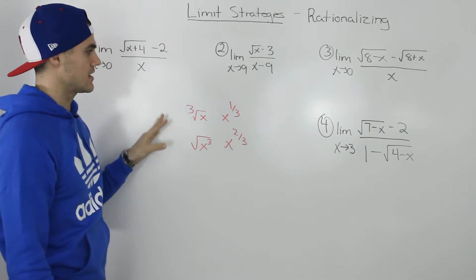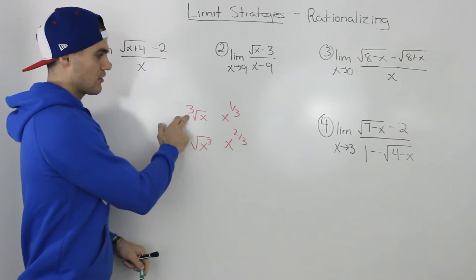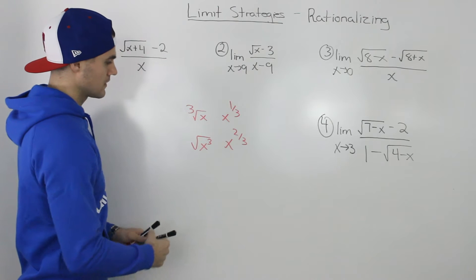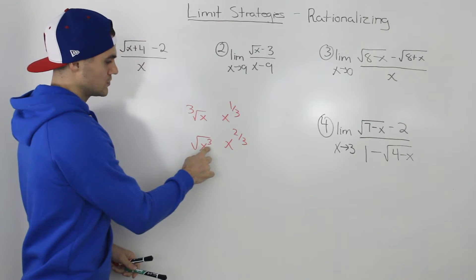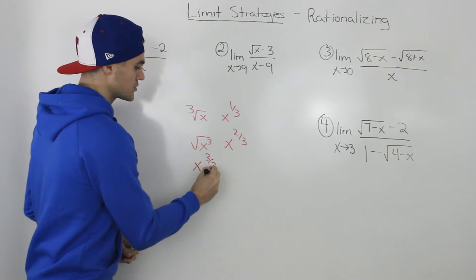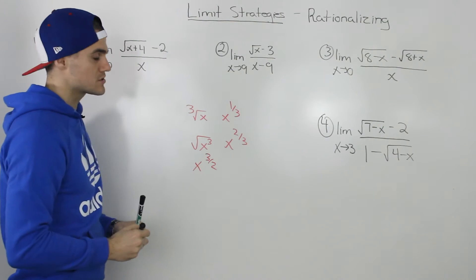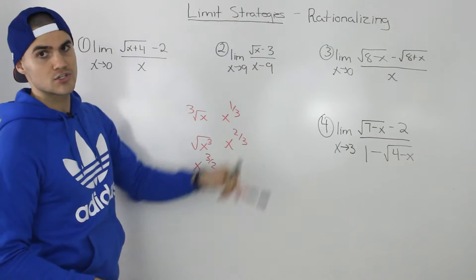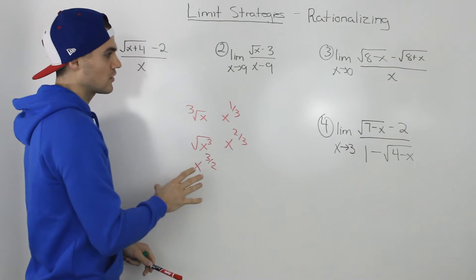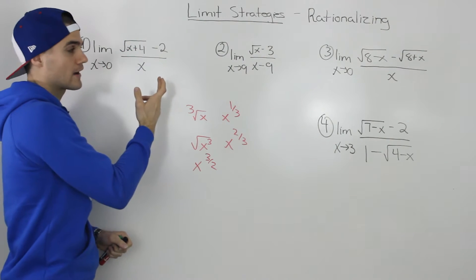A quick point before we get into the examples: whenever you see radicals that have a third root, or rational exponents like 1/3 or 2/3, or the square root of x cubed — which would be x to the power of 3/2 as a rational exponent — you're not going to be using the strategy of rationalizing. We're going to deal with those in a future video using a strategy called change of variable. So just know that rationalizing is only used for regular square root radicals.